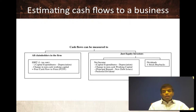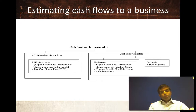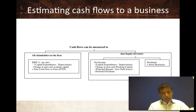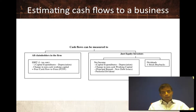For cash flows to the entire business, just climb the income statement. Start with operating income — income before interest expenses. Act like you pay taxes on the operating income hypothetically, with no interest expenses, because we'll capture the tax savings from interest in the cost of capital, so cash flows should not include those tax savings a second time. Then subtract reinvestment needs: the difference between capital expenditures and depreciation, plus the increase in working capital. What you're left with is the free cash flow to the firm — free because it's after taxes and after reinvestment needs, and to the firm because it's before debt payments.